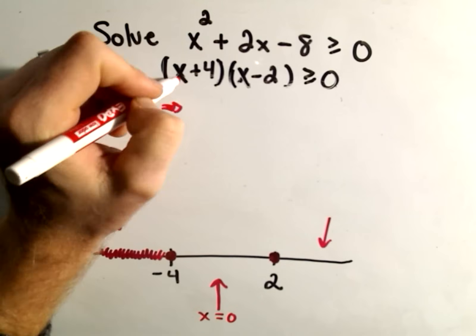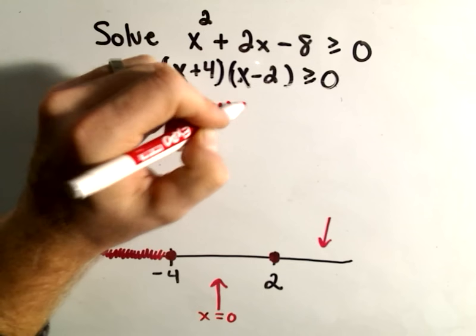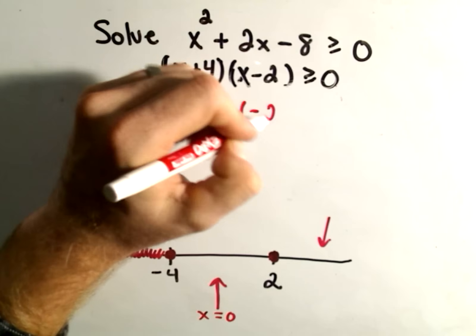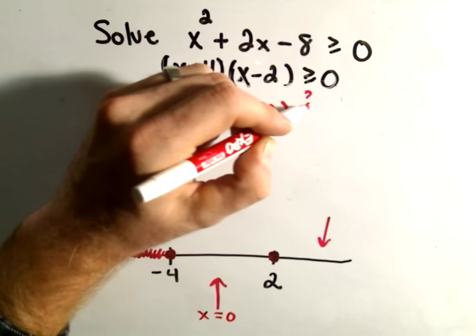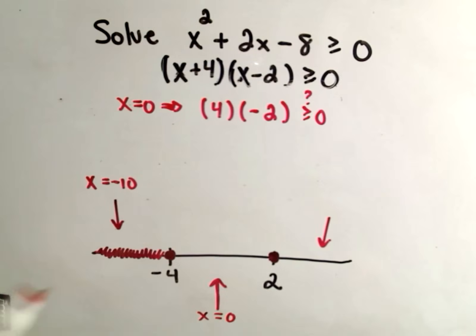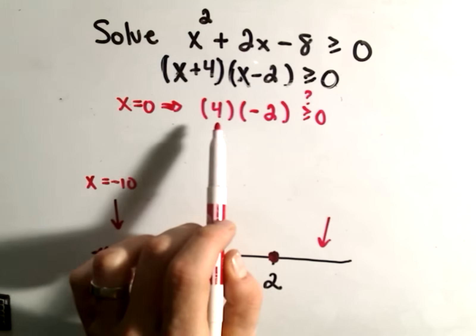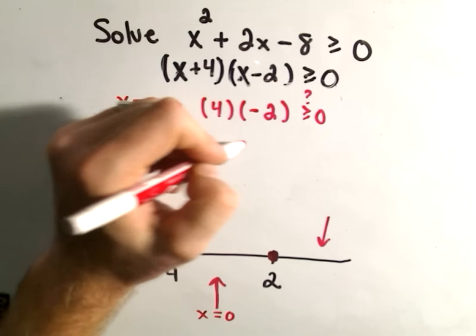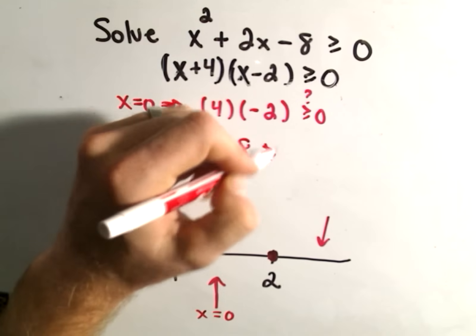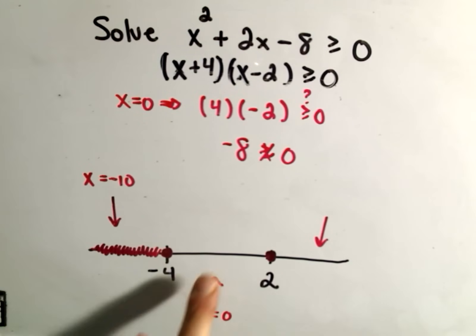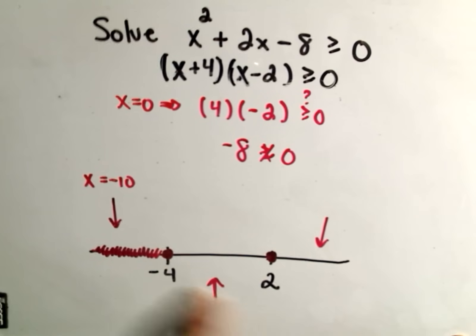on the first part, 0 plus 4 is just 4. 0 minus 2 is negative 2. And I have to ask myself, is that greater than or equal to 0? Well, again, you're going to get a positive times a negative. We're going to get negative 8. And negative 8 is not greater than or equal to 0. So that means the stuff in the middle doesn't work.